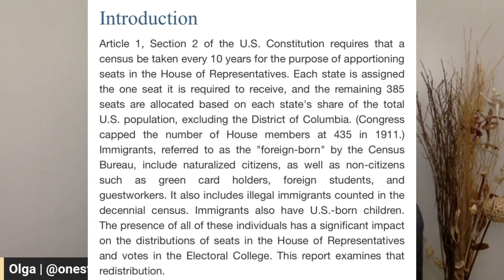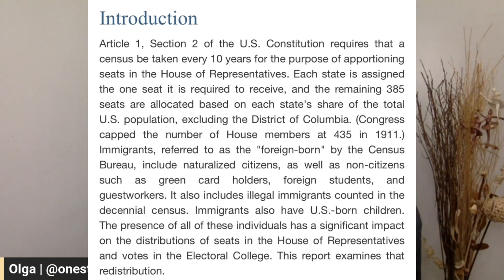Let's dig into it. Each state is assigned the one seat it is required to receive, and the remaining 385 seats are allocated based on each state's share of the total U.S. population, excluding the District of Columbia. Immigrants, referred to as the foreign-born by the Census Bureau, include naturalized citizens as well as non-citizens, such as green card holders, foreign students, and guest workers. It also includes illegal immigrants counted in the census.